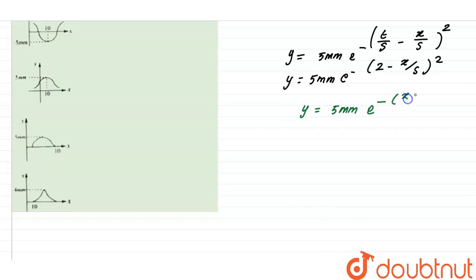So y equal to 5mm e power minus x by 5 minus 2 whole square. So y equal to 5mm divided by e power x by 5 minus 2 whole square.